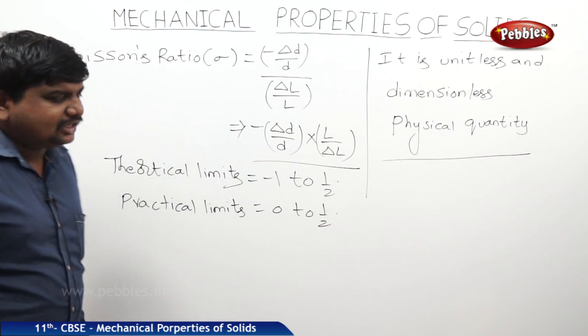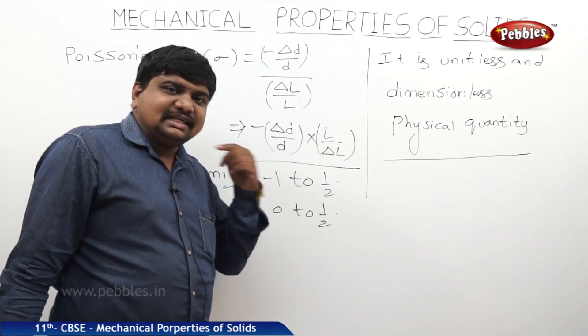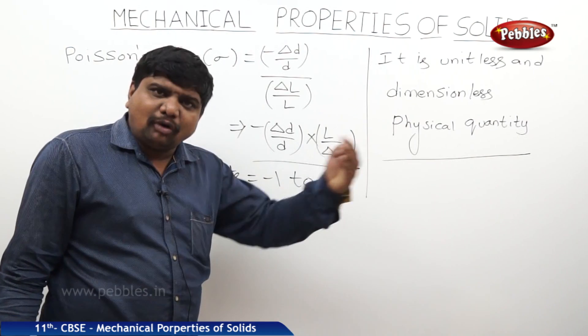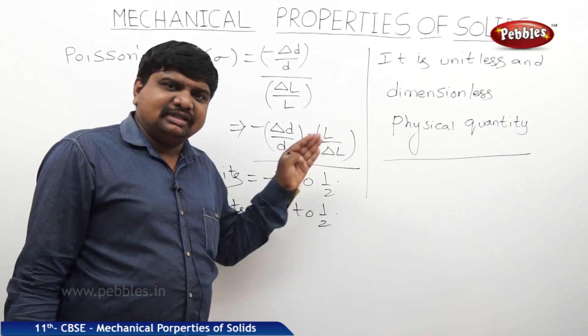This is the information about the Poisson's ratio. Now, this Poisson's ratio is related to the remaining modulus of elasticity. Now we will see that relation.